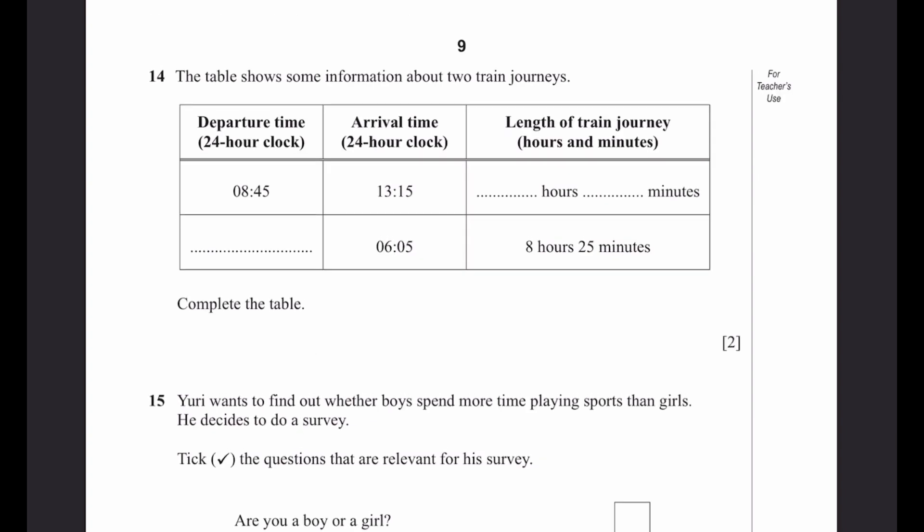Question 14. The table will show some information about two train journeys: departure time, arrival time, and length of train journey. Complete the table. Departure and arrival are 8:45 and 1:15 pm respectively. We subtract this to get the length of train journey: 13:15 minus 8:45. We get 4 hours and 30 minutes.